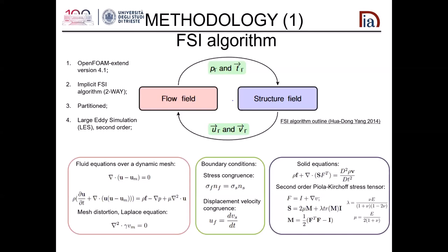The algorithm works as follows. For the free dynamic field, we consider the incompressible Navier-Stokes equations over a dynamic mesh, so mesh motion is taken into account. The mesh distortion is governed by the Laplace diffusion equation. The load on the body passes from the fluid solver to the solid solver. The momentum equation is solved using the second-order Piola-Kirchhoff stress tensor, and the displacement of the body is determined. The solid displacement is then transferred back to the fluid solver, and so on.